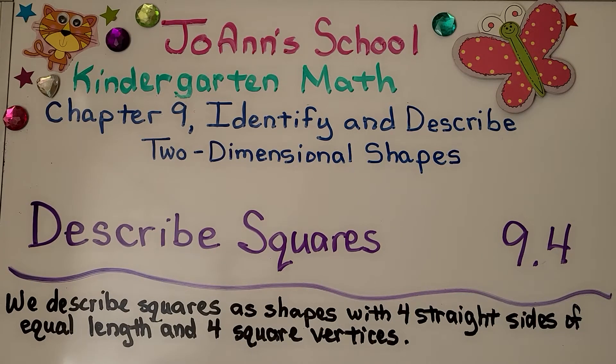Lesson 9.4 describes squares. We describe squares as shapes with four straight sides of equal length and four square vertices.